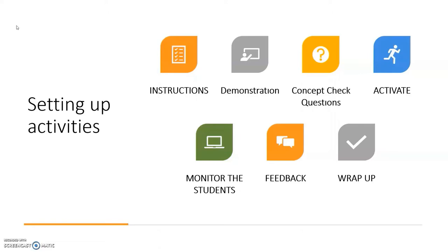How is setting up activities supposed to be done? Firstly, you need to explain the activity in graded language and give instructions. Then give a very clear model of the activity with student participation, which is demonstration. Then use concept check questions to ask whether the key aspects of the activity have been understood. Then activate — start the activity clearly and let the responsibility be on the students. Then monitor students to ensure they are on task. Then conduct a feedback session with the whole group. And lastly, wrap up by making closing comments to establish that this phase of the lesson is ending.